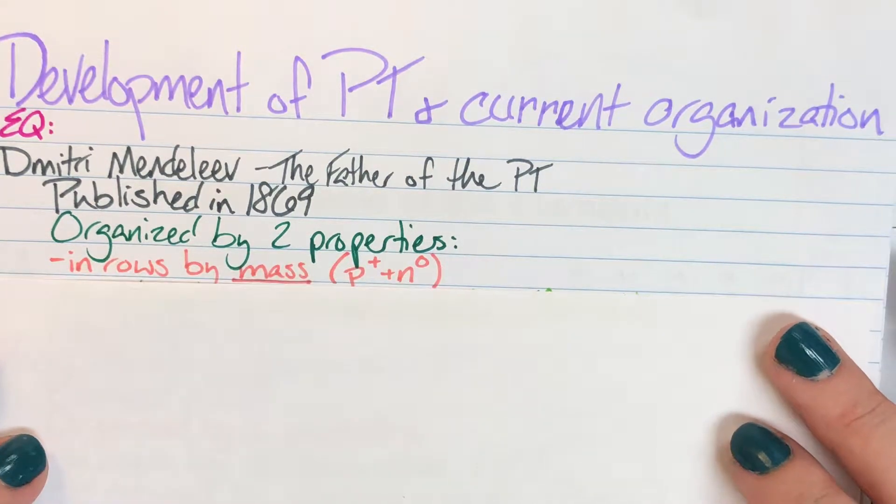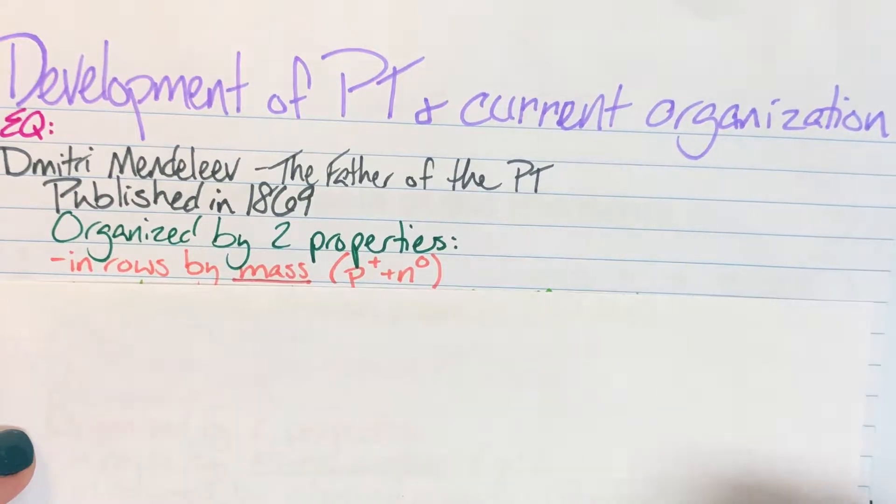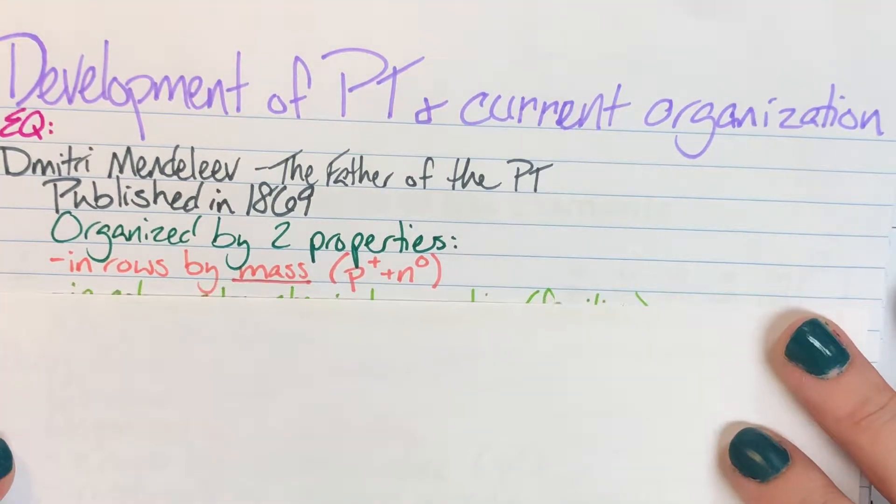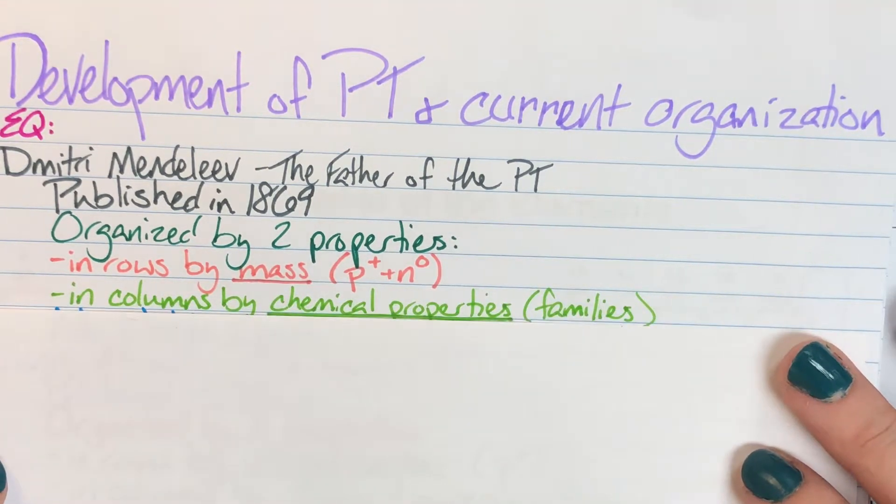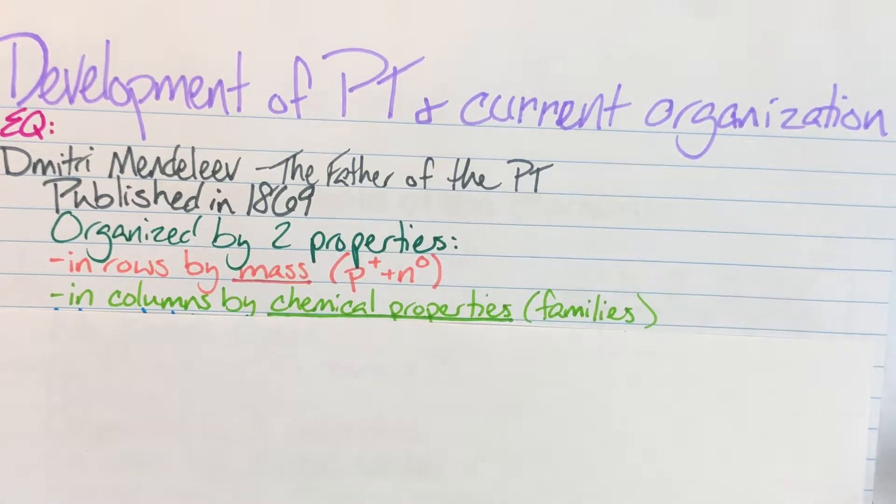The first was by mass. His table in rows, that's left to right, was organized by increasing mass. Remember that our atomic mass is our number of protons plus our number of neutrons. And in columns by chemical properties. We now call those chemical properties our chemical families, but chemical properties in vertical columns and mass in horizontal rows.